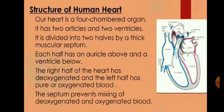Now let us discuss about the structure of the human heart. Our heart is a four-chambered organ. It has two auricles and two ventricles. The auricles or the atria are the receiving chambers, whereas the ventricles are the distributing chambers of the heart. It is divided into two halves by a thick muscular septum.